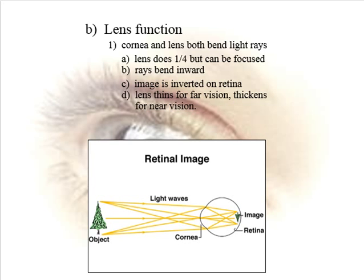If we want to see something up close, we need to do more light ray bending, so we need the lens to bulge — become more convex. If we're trying to see something far away, we need the lens to flatten and not bend the light rays as much. So if I hold up my laser pointer from a distance it's easy to see, but if I bring it close to your eyes, you've got to do a whole lot more light ray bending, so the lens bulges. Further away, we flatten; up close, we need to bulge.